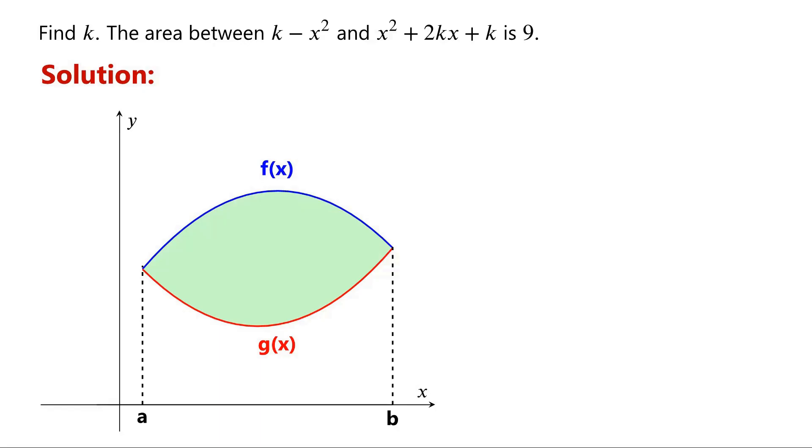Then, find the points where the two curves intersect. If we denote the x coordinates of the points as a and b respectively, then the area under curve g of x is equal to the integral of g of x dx from a to b, and the area under curve f of x is equal to the integral of f of x dx from a to b.